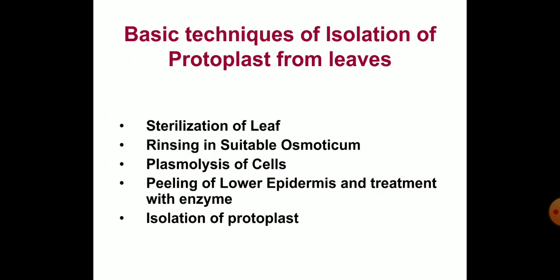The basic technique for isolation of protoplasts from leaves involves the following steps: sterilization of leaf, rinsing in suitable osmoticum, plasmolysis of cells, peeling of lower epidermis and treatment with enzyme, and isolation of protoplasts.